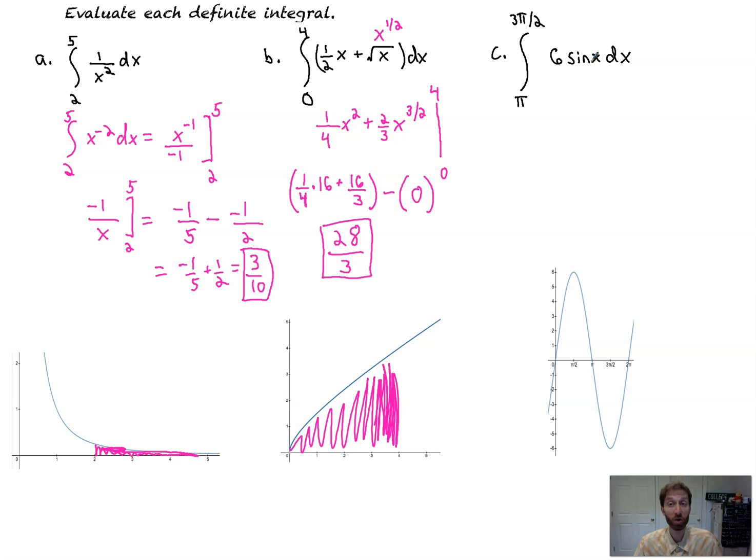Does it work with trig? Yeah, it's a continuous function, so it works with trig. We're finding the area from pi to three pi over two. We're going to expect our answer to be negative. Everything's below the x-axis there between that curve and the x-axis.